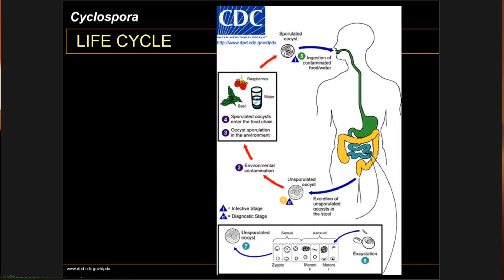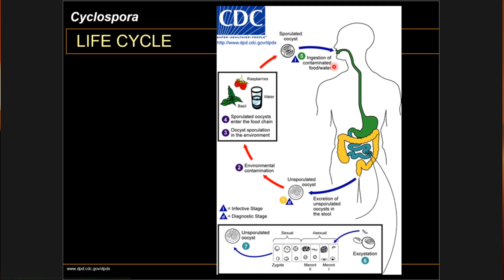This is the life cycle of Cyclospora, again very similar to Cryptosporidium. The life cycle is generally circular. When a human ingests sporulated oocysts in contaminated food and water, the sporozoites inside the sporocysts excyst — meaning they exit the cyst in the gut lumen and invade the enterocytes of the epithelium of the duodenum and jejunum.